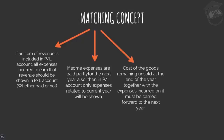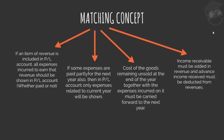Third, cost of goods remaining unsold at the end of the year, together with expenses incurred on it, must be carried forward to the next year — as my accountant friend did by carrying forward the cost of material for 1,000 unsold cups of coffee. Fourth, income receivable must be added to revenue, and advance income received must be deducted from revenues — services rendered but unpaid are recorded now; advance payments for future services are recorded only when services are provided.